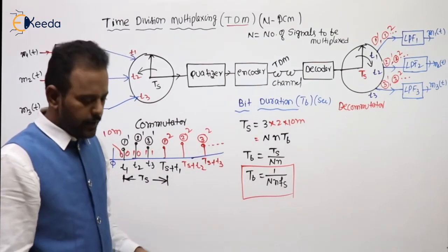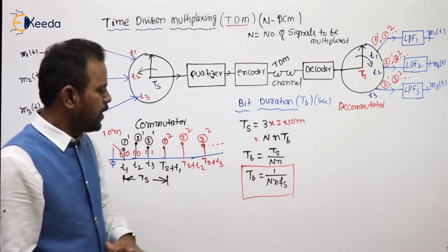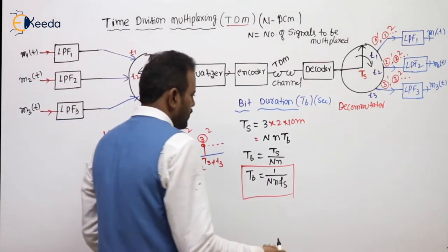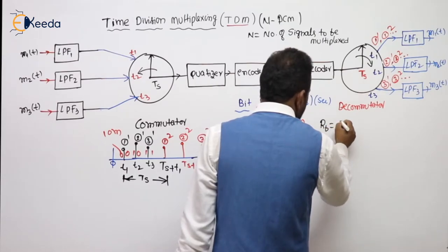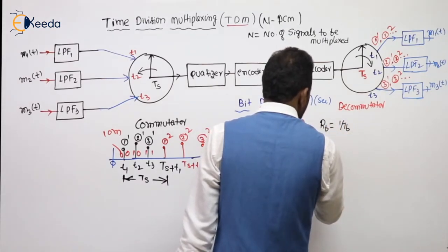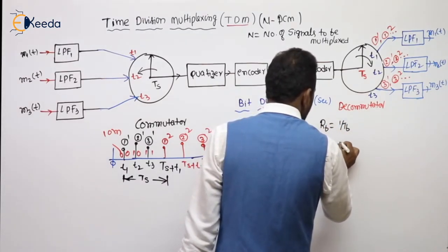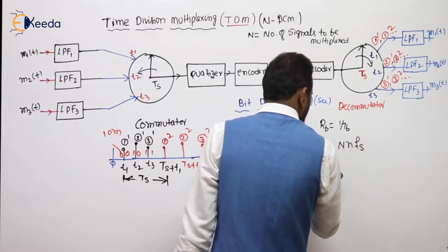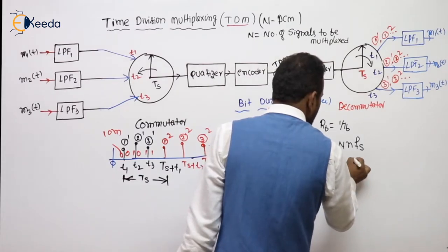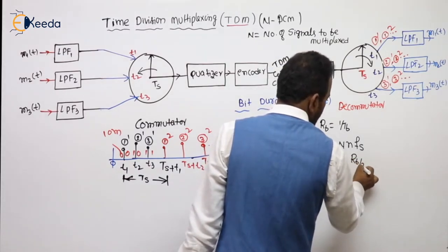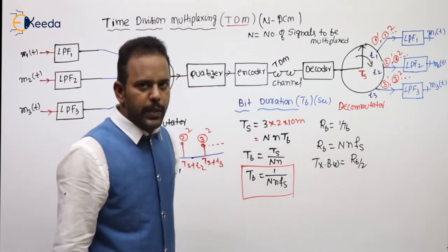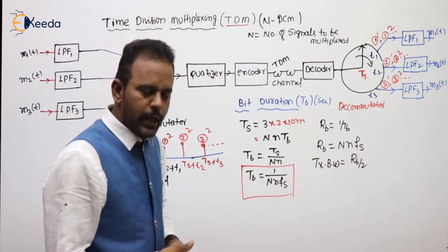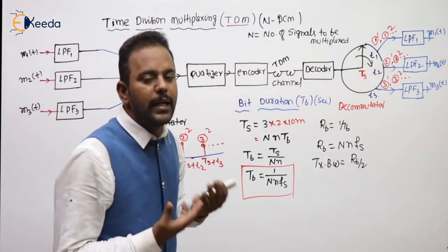Once you have the bit duration formula, the bit rate RB = 1/TB = N × n × Fs. The transmission bandwidth is RB/2. The formula is the same as PCM, but here N × n comes in because N signals are being multiplexed.